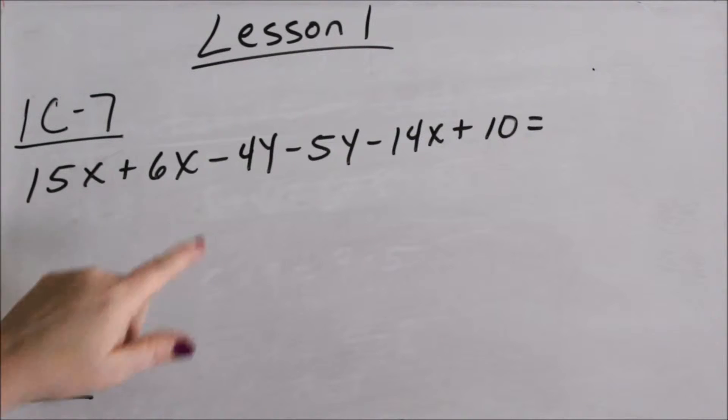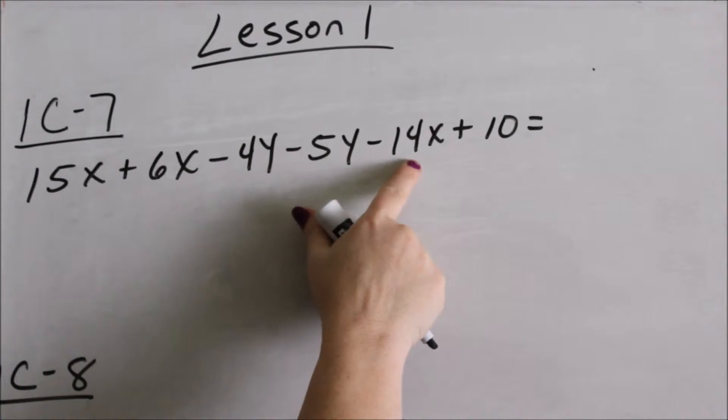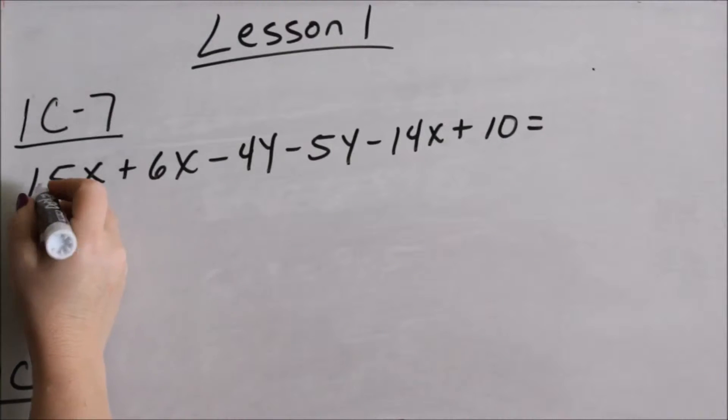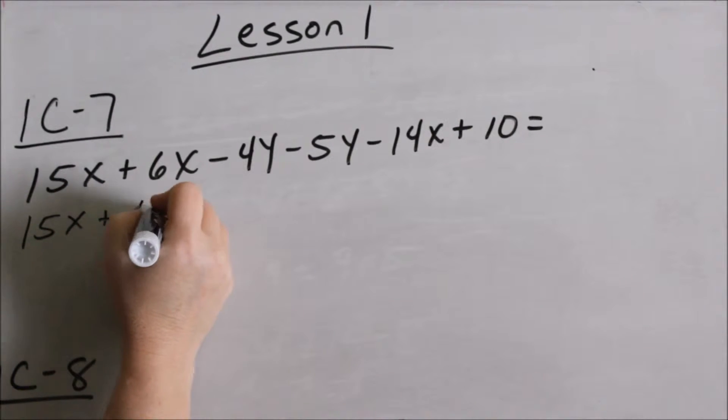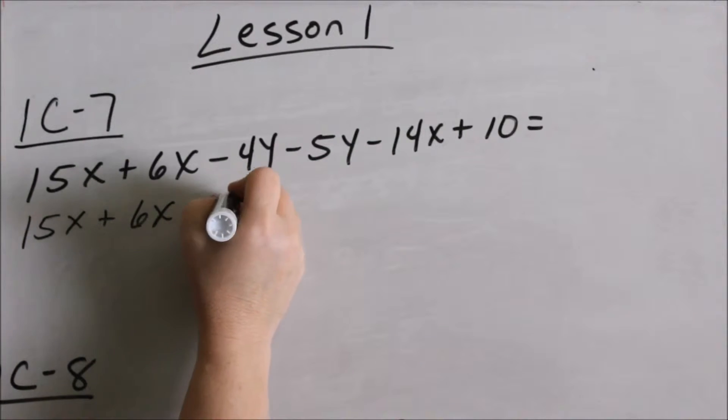You can only add the same letters to each other and whole numbers. One way to do this problem is maybe you want to rearrange it to where all your X's are next to each other. The one thing to always remember: the sign in front of the number stays with the number. This negative stays with the 4Y. This negative stays with the 14X. So if I move everything around, I'm going to leave my 15X plus 6X, but I'm going to move my negative 14X next to my X's.